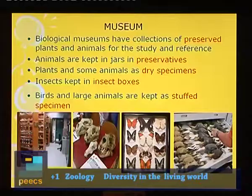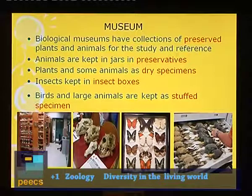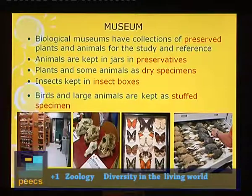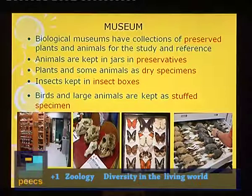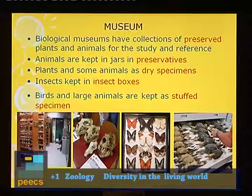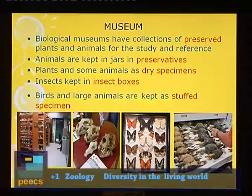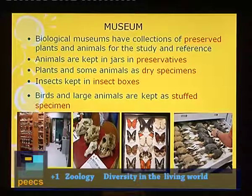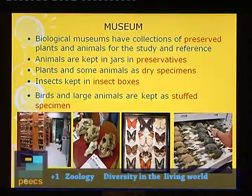Then museum. Biological museums have collections of preserved plants and animals for study and reference. Animals are kept in jars in preservatives — chemicals that prevent spoiling. Plant stands and animals are dry specimens, insects are kept in insect boxes, and birds and large animals are kept as stuffed specimens. Stuffing involves removing internal organs and flesh and filling with cotton inside.